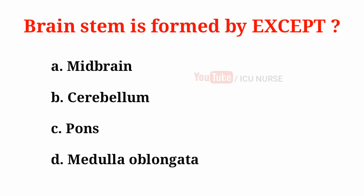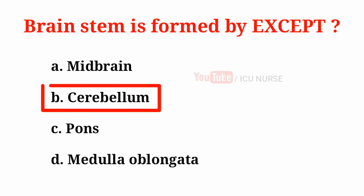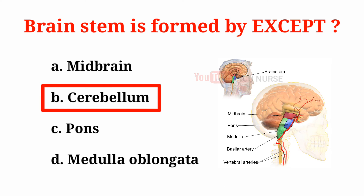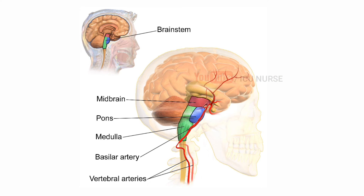The brain stem is formed by, except: A. Midbrain, B. Cerebellum, C. Pons, D. Medulla oblongata. The correct answer is B. Cerebellum. The brain stem is made up of three major structures: the medulla oblongata, the pons, and the midbrain. The cerebellum is not a part of the brain stem.